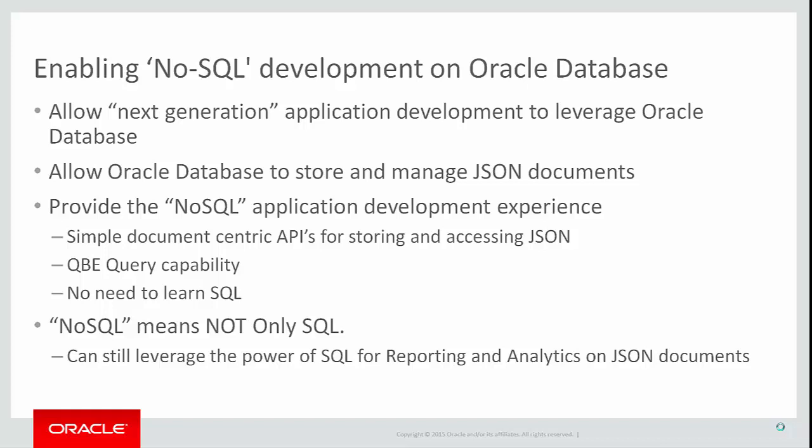What we set out to do with Oracle Database 12c was to enable the next generation of application developers to continue to leverage Oracle as their data management platform. To meet this objective, the database needed to provide a simple document-centric API that allows a developer to store and manage JSON using an Oracle database in exactly the same way they would use a NoSQL database, a query-by-example capability that allows searches on JSON documents without needing to learn SQL, and the ability to perform common operations such as creating and dropping collections and indexing without involving a database administrator.